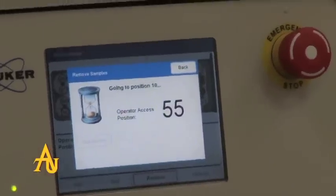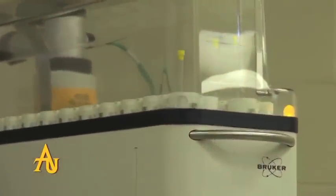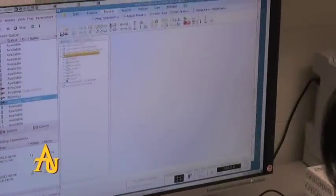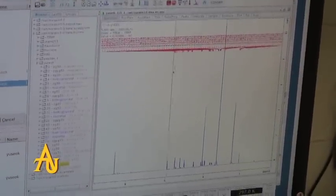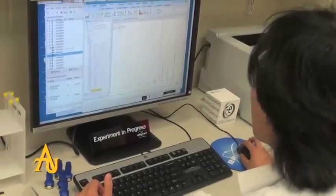Students can come down, put their sample into the sample queue, and go to the computer and type in what experiments they want to run. It will run those experiments and send the data back to the organic chemistry lab so they can analyze it there. Using just a minimal amount of interaction, they can collect their data.